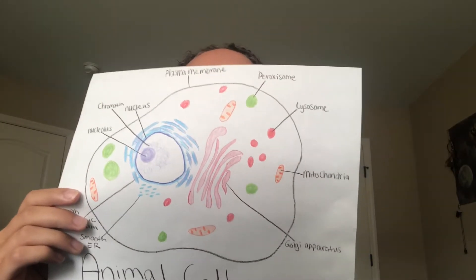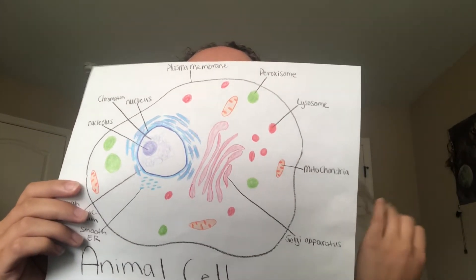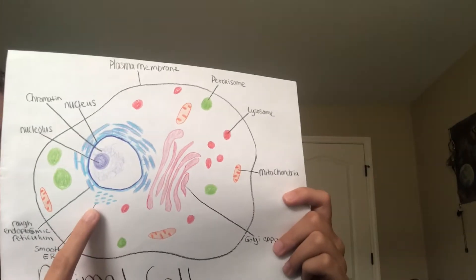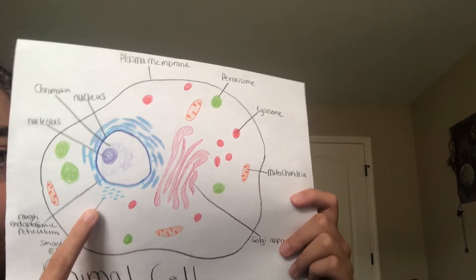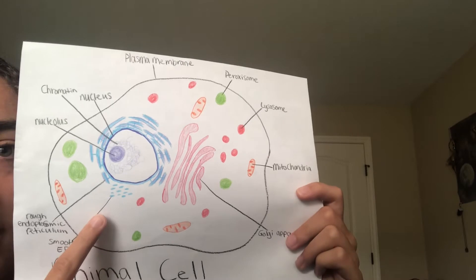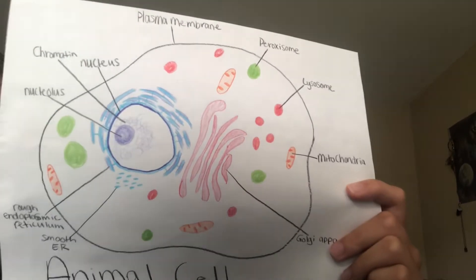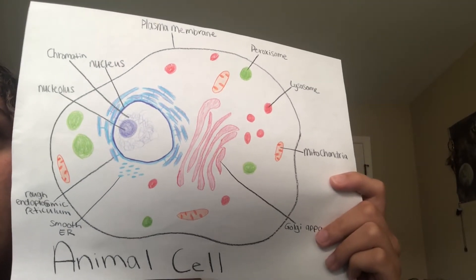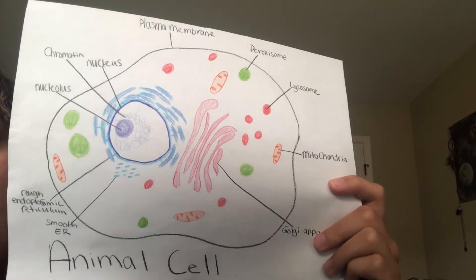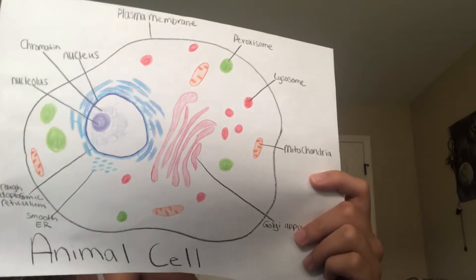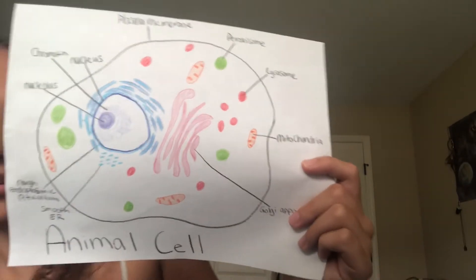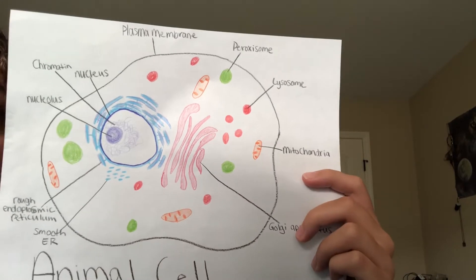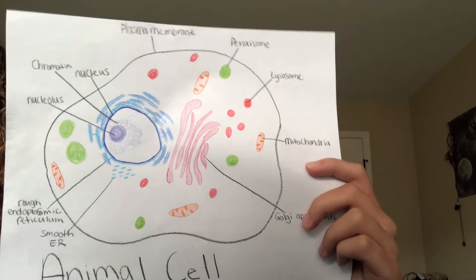These are the smooth endoplasmic reticulum, which makes lipids, produces steroid hormones, and detoxes harmful byproducts from the cell. These are the Golgi apparatus, which receives proteins from the ER and moves them to where they need to go.